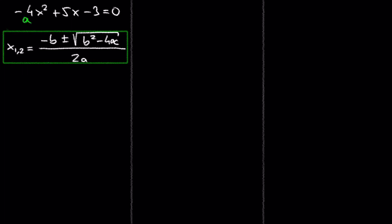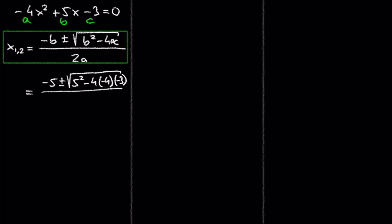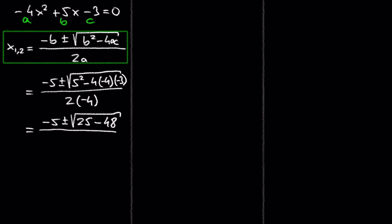a is negative 4, b is 5, and c is negative 3. So we have negative b, which is negative 5, plus or minus the square root of b squared — which is 5 squared — minus 4 times a, which is negative 4, times c, which is negative 3. At the bottom we have 2 times a, which is 2 times negative 4. 5 squared is 25; negative 4 times negative 4 is 16, times negative 3 is negative 48; and 2 times negative 4 is negative 8.